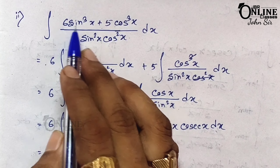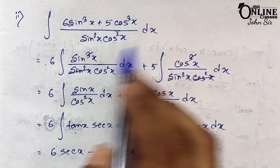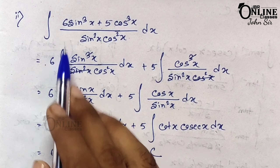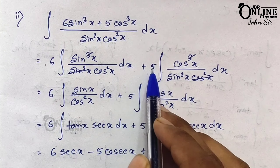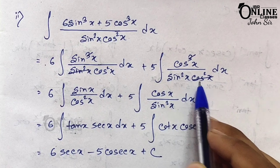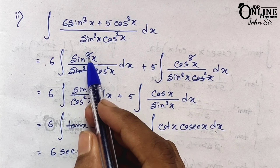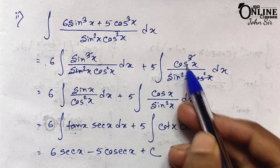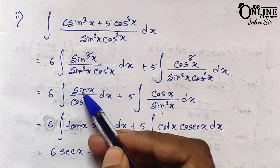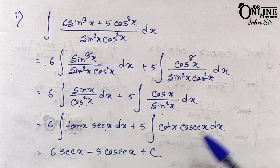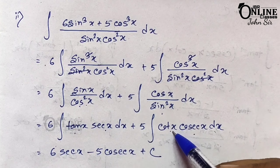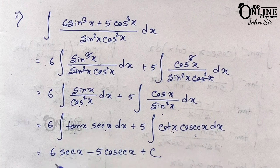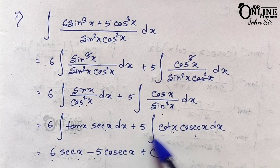Sum 17.2: integration of (6sin³x + 5cos³x) / (sin²x·cos²x). Separate: 6∫sin³x/(sin²x·cos²x)dx + 5∫cos³x/(sin²x·cos²x)dx. First becomes 6∫sin x/cos²x dx = 6∫tan x·sec x dx = 6 sec x. Second becomes 5∫cos x/sin²x dx = 5∫cot x·cosec x dx = −5 cosec x. Final answer: 6 sec x − 5 cosec x + c.